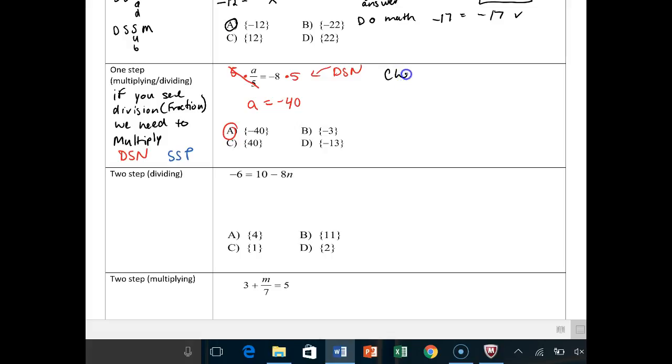To check it, again, all you're going to do is write out the problem. A over 5 is equal to negative 8. Exactly how it was. You're, again, going to plug in your answer. Negative 40 over 5 equals negative 8. And then you're going to ask yourself, is negative 40 divided by 5 negative 8?